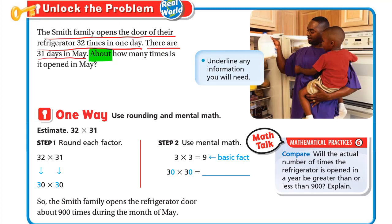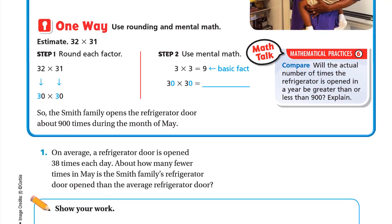So about how many times is it opened in May? In one day it's 32 times, so in 31 days it will be 32 × 31. One way is to use rounding and mental math. So we estimate 32 × 31. Step one: round each factor. We round 32 and 31 to the nearest 10. To round 32, to the right of the 3 we have 2, which is a weak digit, so we keep it 30.